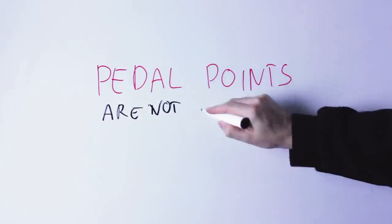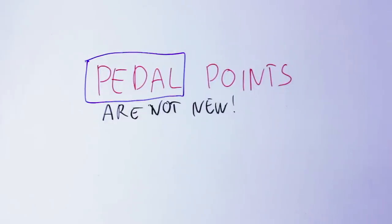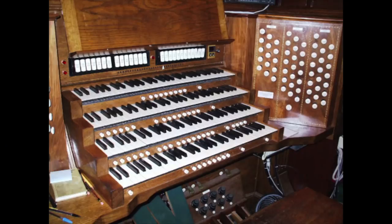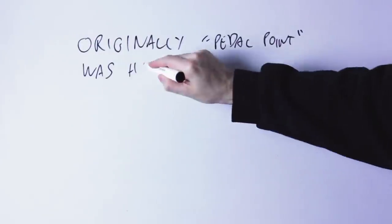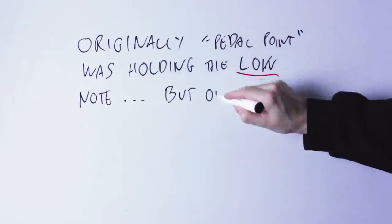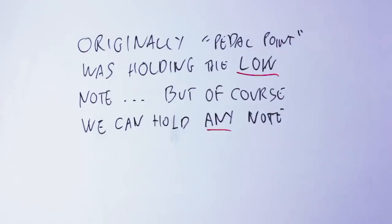Pedal points are not a new idea — they were already well known at the time of Bach, and in fact the very name pedal point comes from that time. If you ever played a church organ, you know that there are one or more keyboards for your hands called manuals, and then there can be a keyboard for your feet called a pedal. The pedal controls the super low notes of the organ, and indeed what the pedal point was at the time was to hold the low note on the organ and change the chord on top. But of course we are not restricted to do this with a low note — we can also do it with a high note or a middle note, as we'll see later.